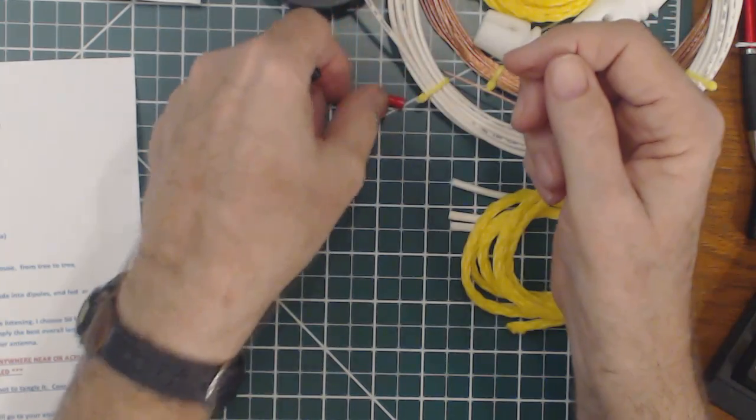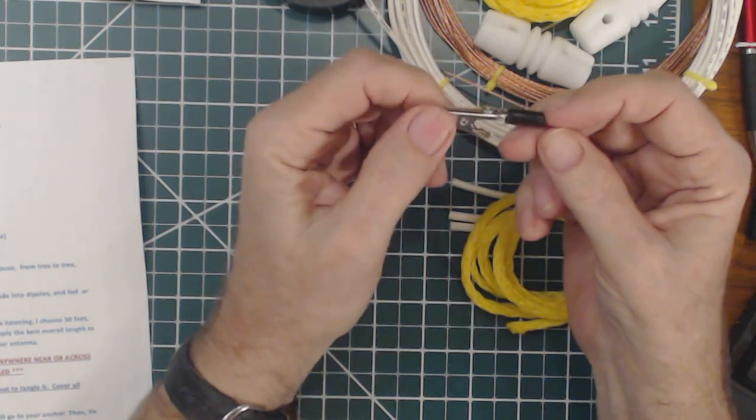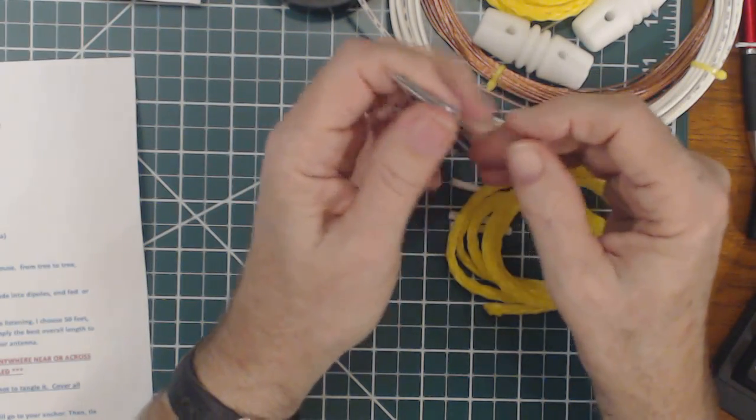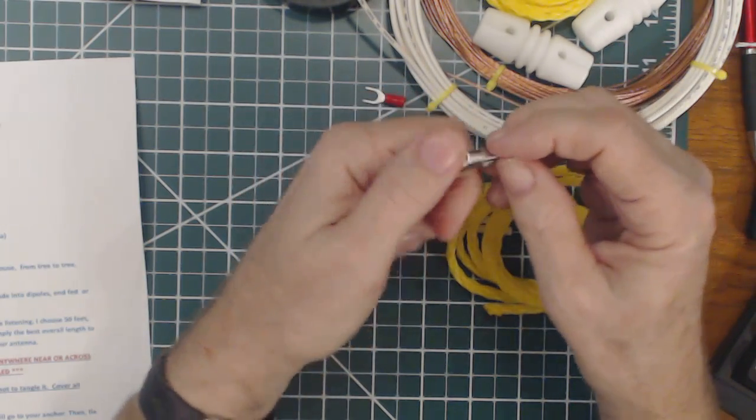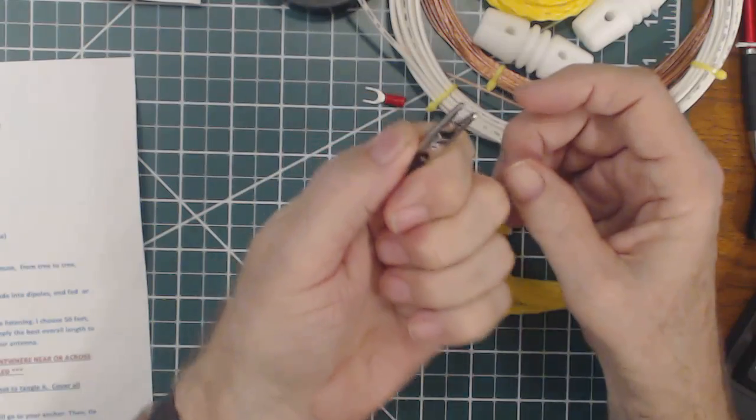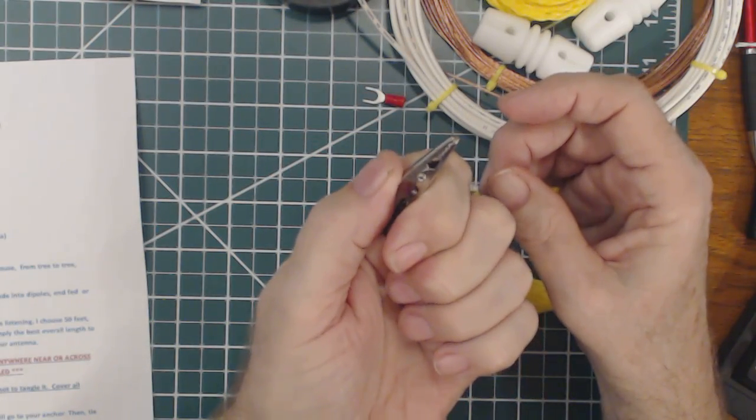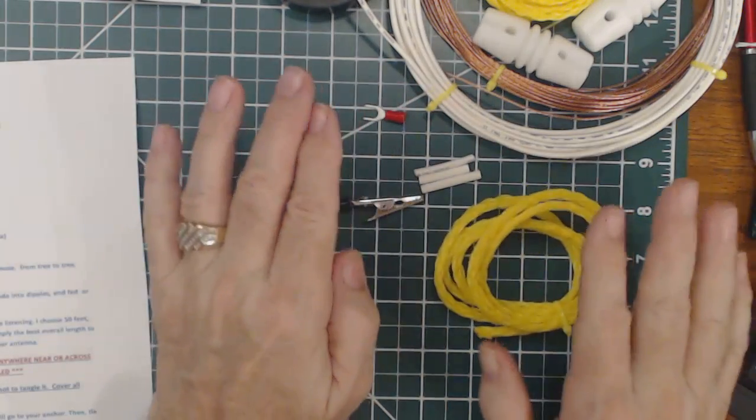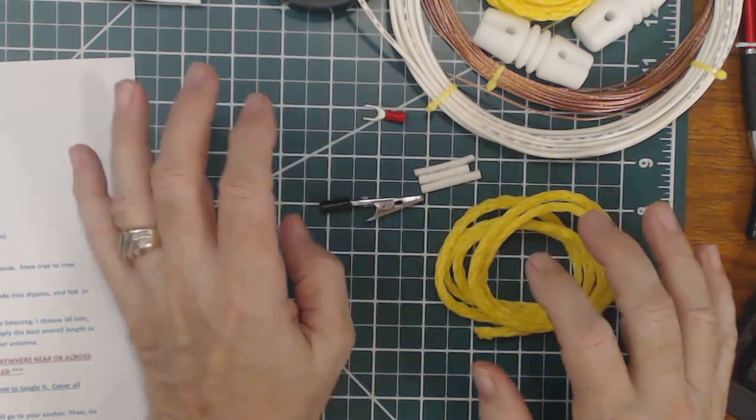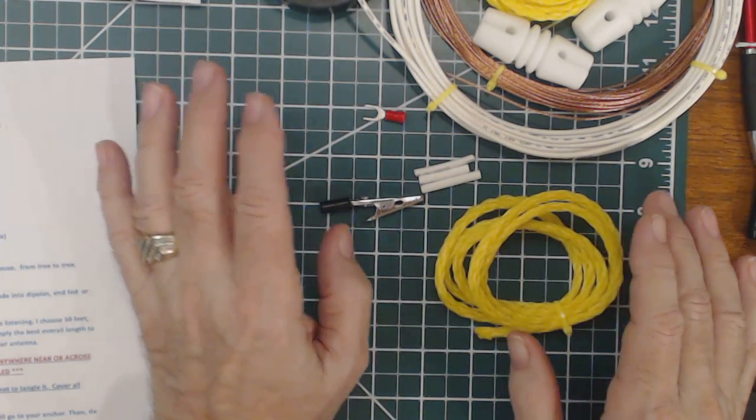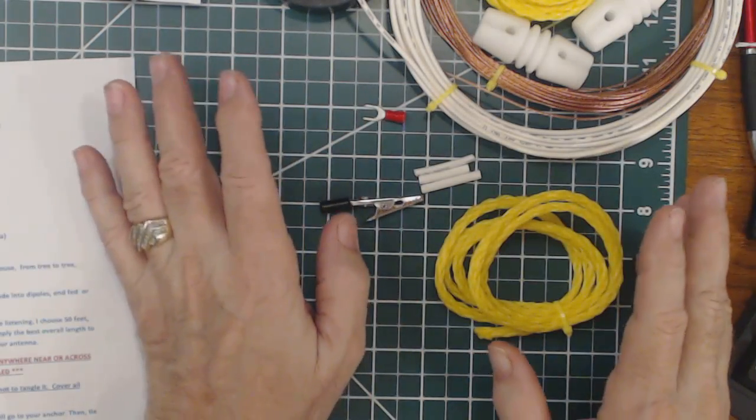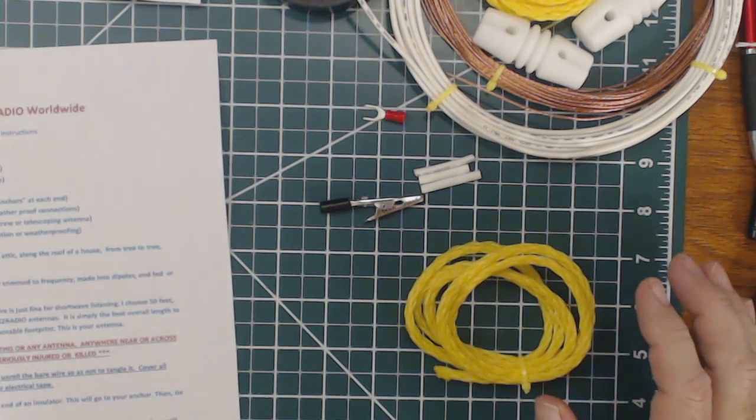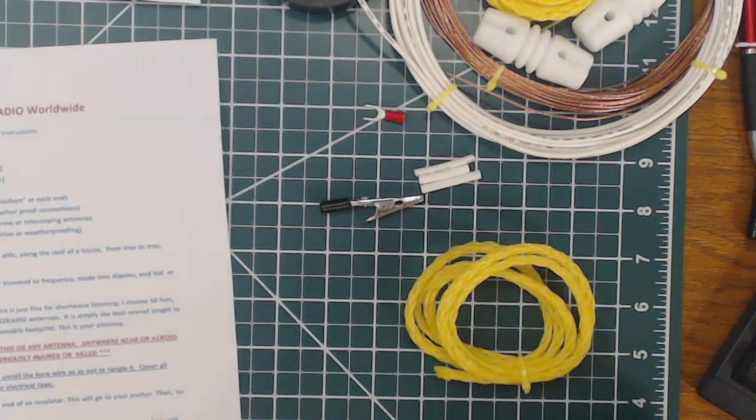The other way is an alligator clip. You tie this white wire to the alligator clip, and then you can clip this to your built-in telescopic antenna on your radio. In his ad he says if you need something a little different - longer wire or some of this stuff pre-assembled - he can do that for you and tell you what the price is. That's what you get in the kit.